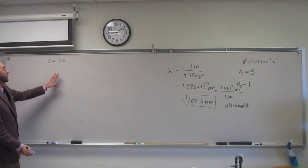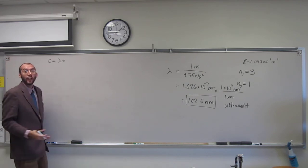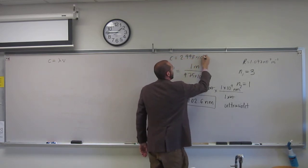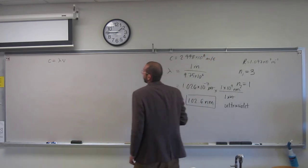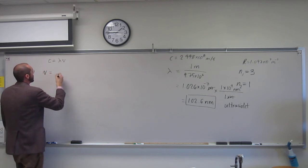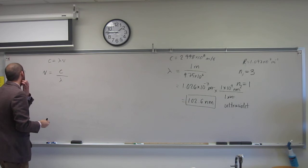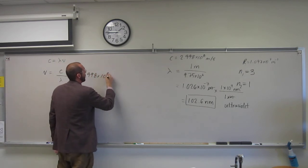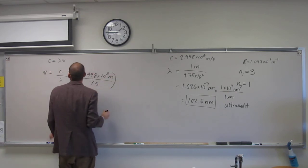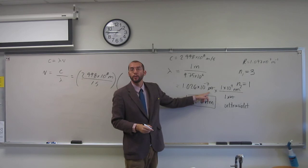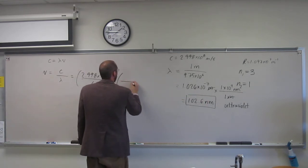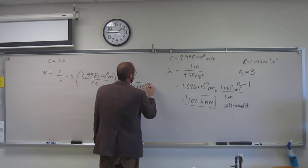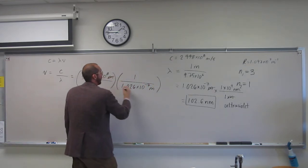So, frequency is nu. And we've got lambda, and we know the speed of light that's given to us. Speed of light is 2.998 times 10 to the 8th meters per second. So if we're looking for frequency, that's C divided by lambda, 2.998 times 10 to the 8th meters per one second. And we've got meters here, so let's just use that number.